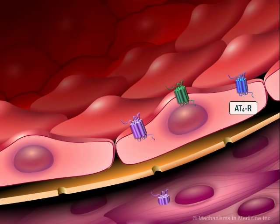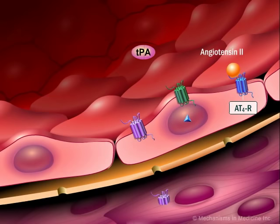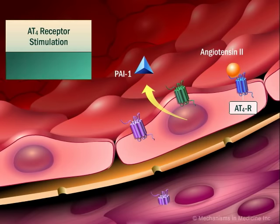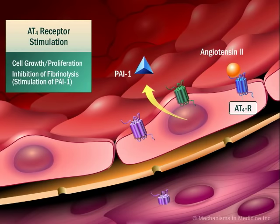Another angiotensin-2 type receptor is the AT4 receptor. Its stimulation may increase synthesis of the natural inhibitor of TPA called pi-1, thereby reducing effective fibrinolysis. Stimulation of the AT4 receptor also appears to promote cell growth and proliferation.